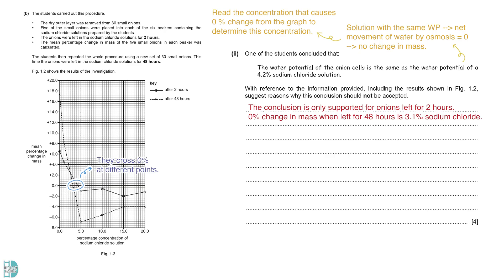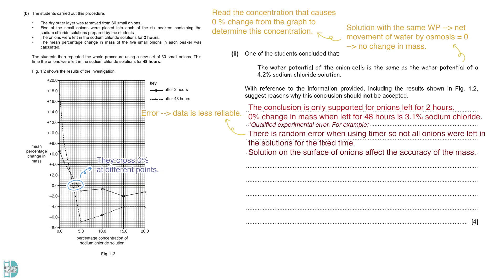You can also comment on the experimental error. For example, there might be a random error when using a timer, so not all onions were left in the solutions for the fixed time. There are anomalous results on the graph. These are the data points or outcomes that deviate significantly from what is expected or considered normal within a given data set. For example, 5% after 48 hours is lower than the other points.